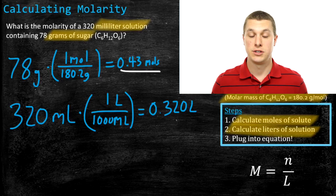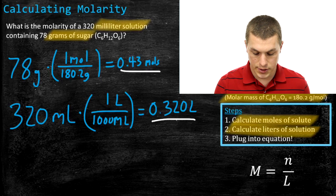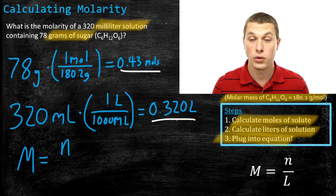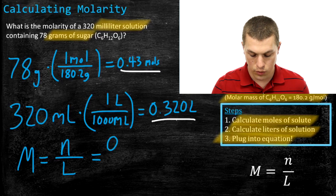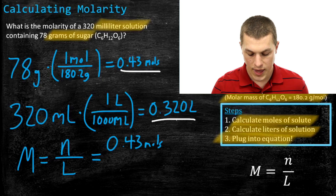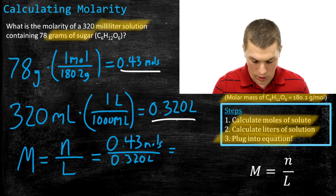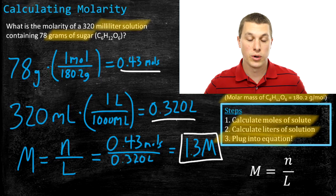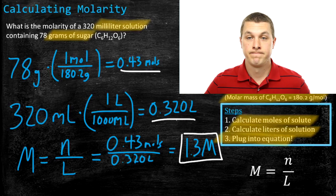Now we have our amount of sugar in moles and the volume of our solution in liters. Step three: plug into the equation. Molarity equals moles of solute divided by liters of solution: 0.43 moles divided by 0.320 liters gives us 1.3 molar. So you can see we had to do more work here because we were given grams and milliliters. But the basic approach is always the same: get moles and liters, then divide.